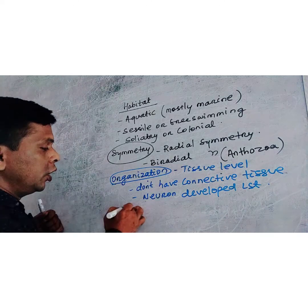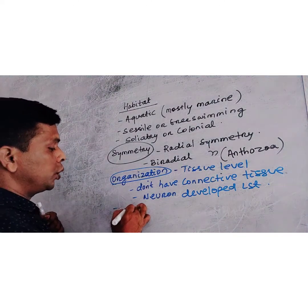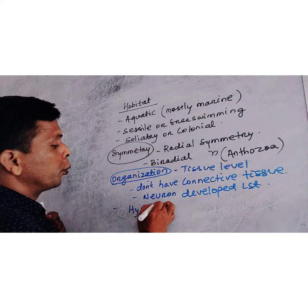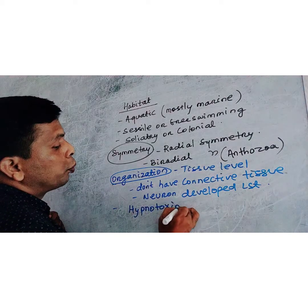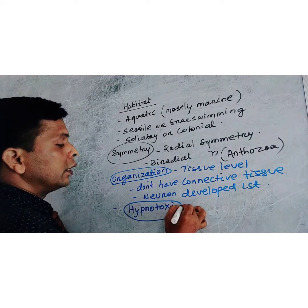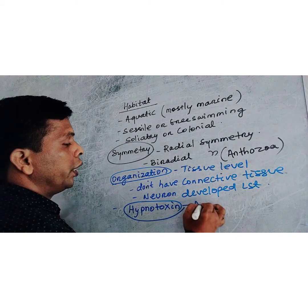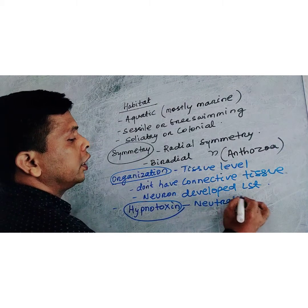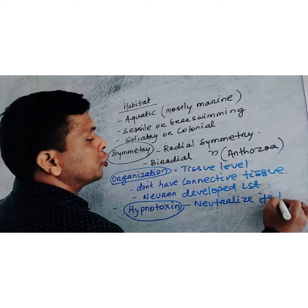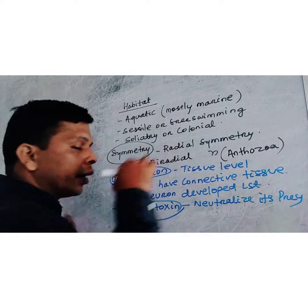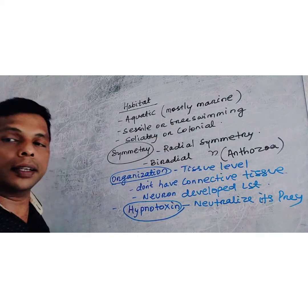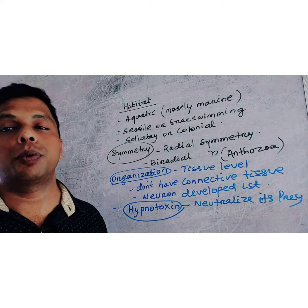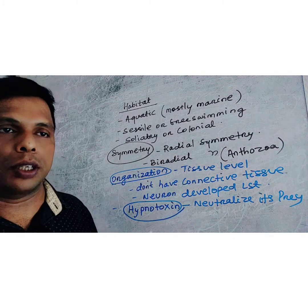The nematocyte cell produces a toxin called hypnotoxin. The role of hypnotoxin is to neutralize the prey. This is one of the important components released from the nematocyte cell.